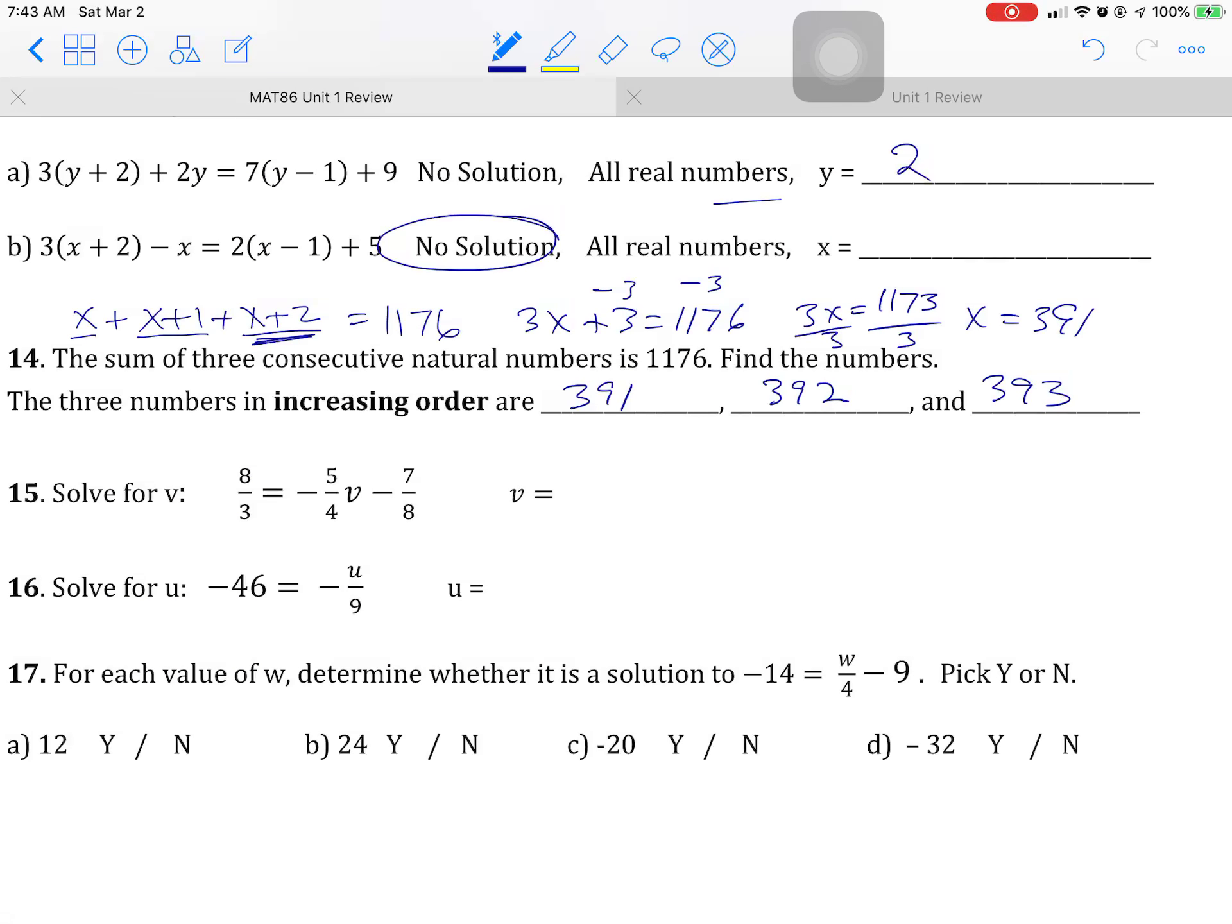Alright, what's 16? I would clear with a 9. And that gives you negative 414 equals negative U. So divide them both by negative 1. So this is 414. So just to check that one, 414 divided by 9 is 46. So we're good.